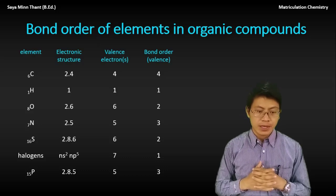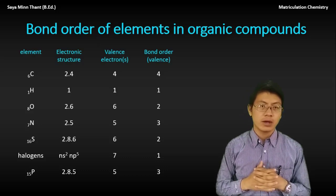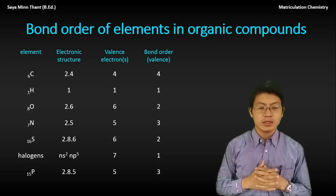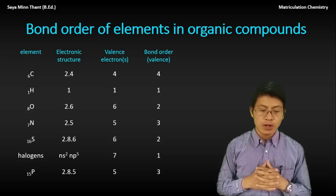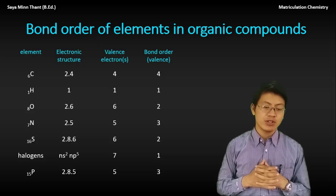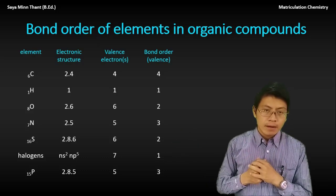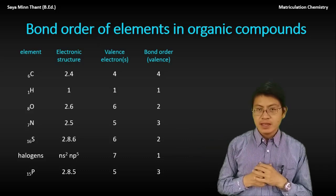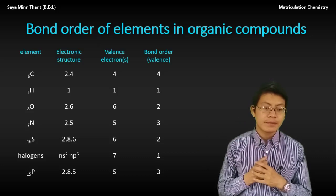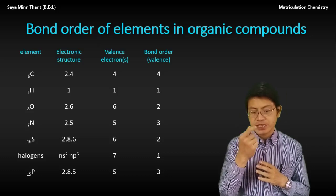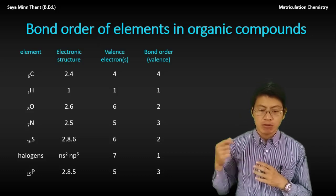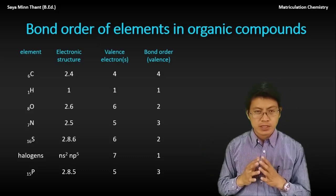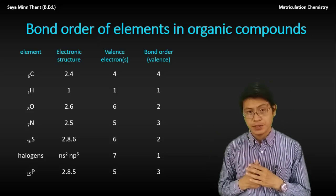This is the atomic number and the electronic structure. The electronic structure applies to hydrogen, oxygen, and nitrogen. Oxygen, nitrogen, sulfur, and hydrogen all have low valence values, and phosphorus is also considered here.